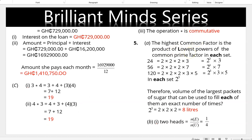The highest common factor (HCF) is the product of the lowest powers of the common prime factors in each set. For 24, 56, and 120: prime factorization gives 2³ × 3, 2³ × 7, and 2³ × 3 × 5 respectively. Since 2³ is common to all three, the volume of the largest packet of sugar is 2³ = 8 pieces.